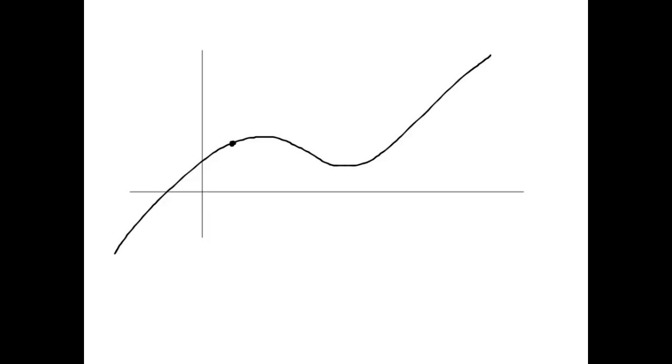Slope really is a concept that only applies to a line. Well, there is a line associated with that point. It's called the tangent line to the curve.